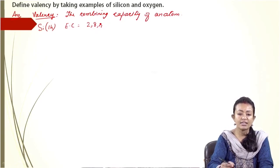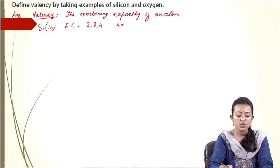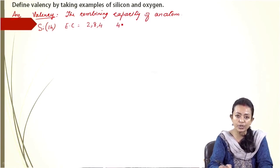So in this case, the valency of silicon is going to be 4. So what is the valency of silicon? It is going to be 4 because in the outermost orbit it has got 4 electrons.